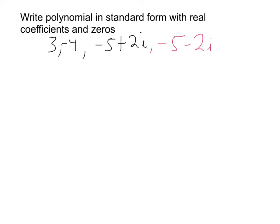And it ends up working out like this: x minus 3, x plus 4. And we're just going to write it in its linear factorization right now.